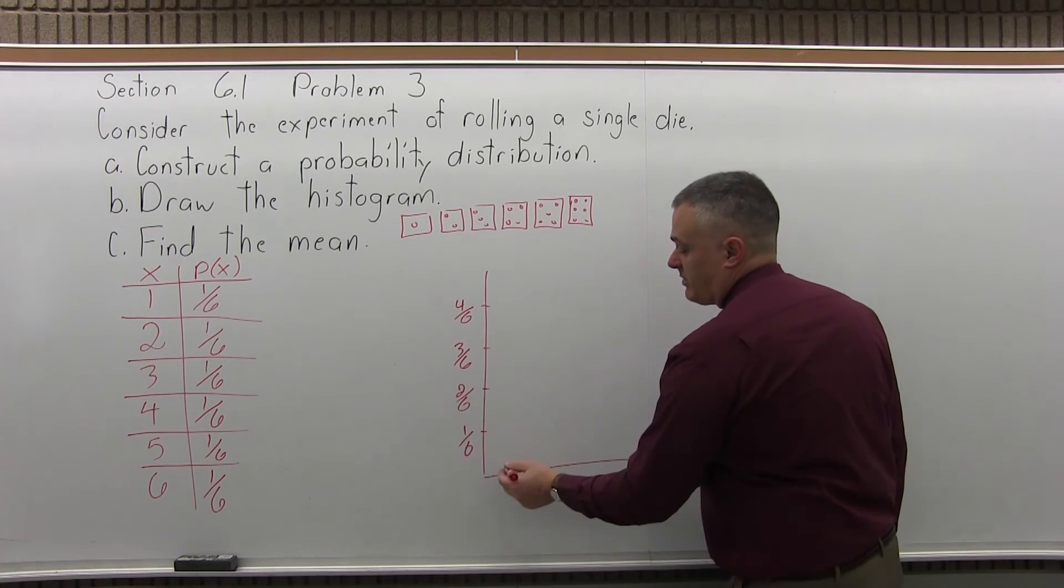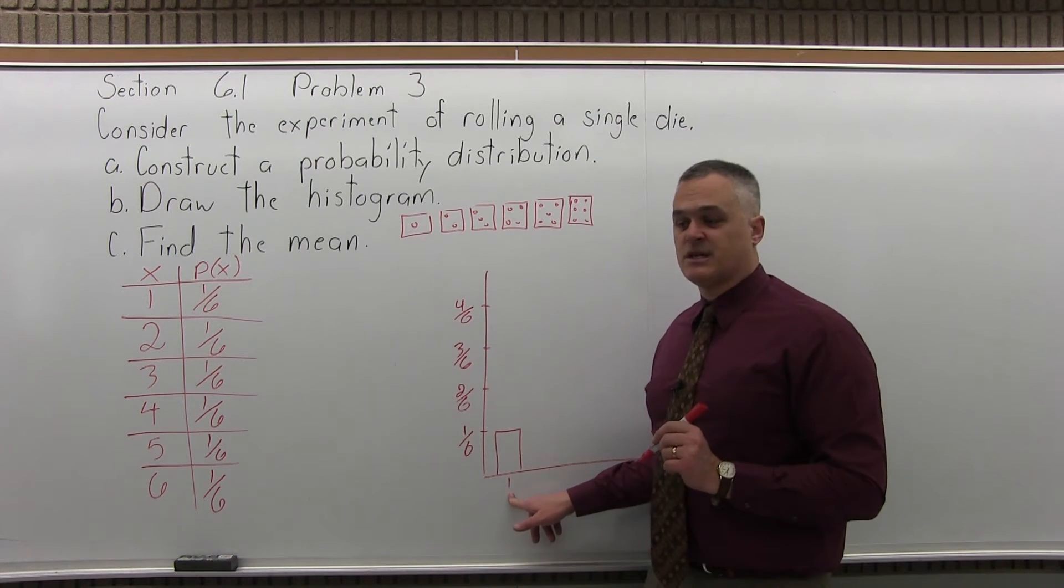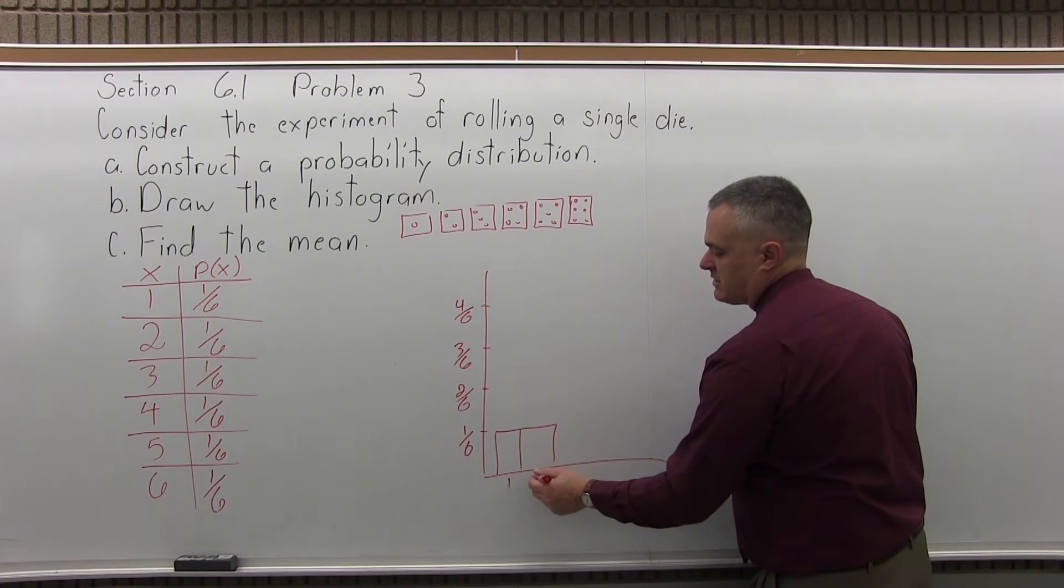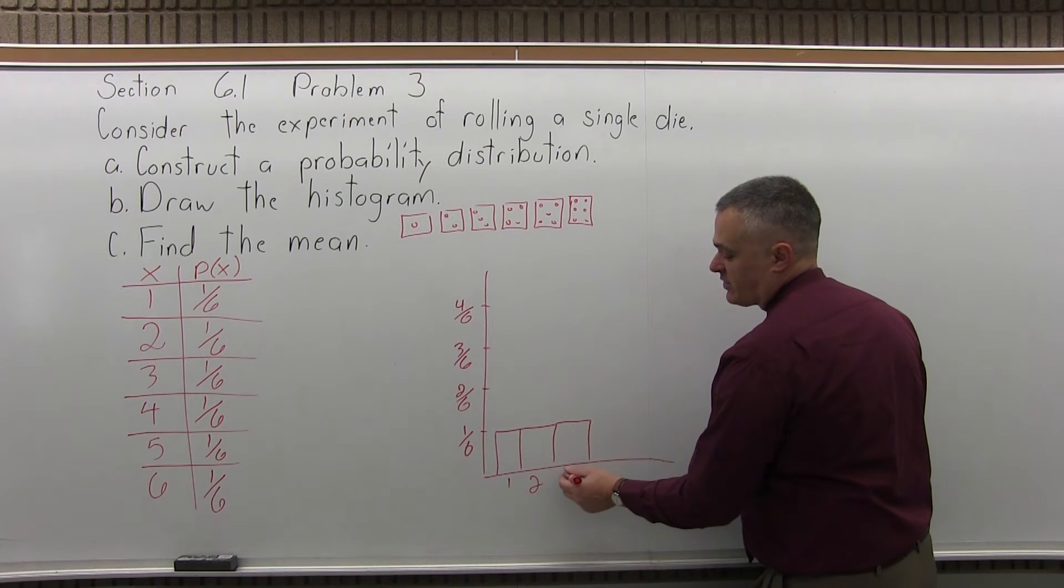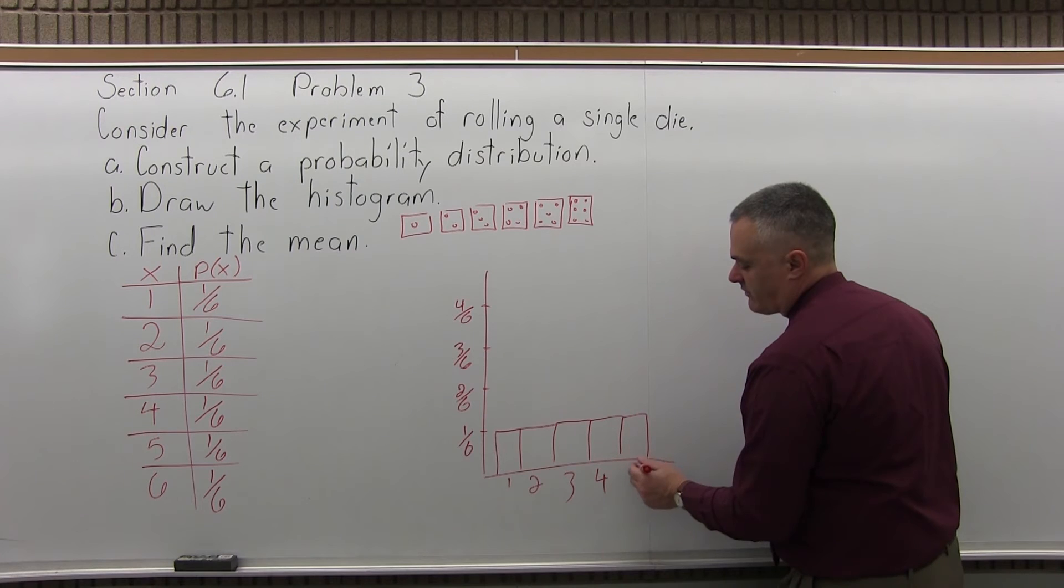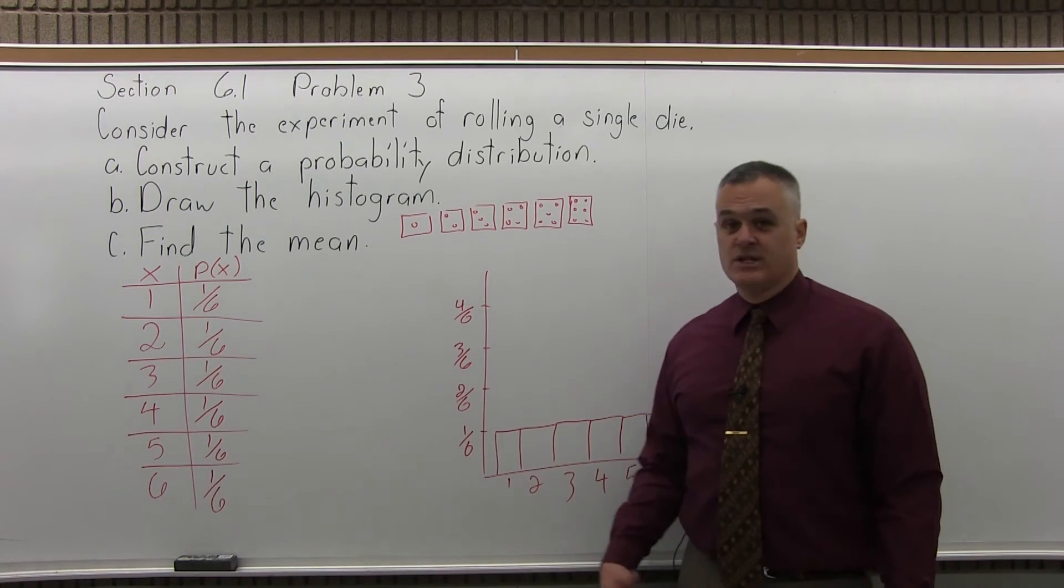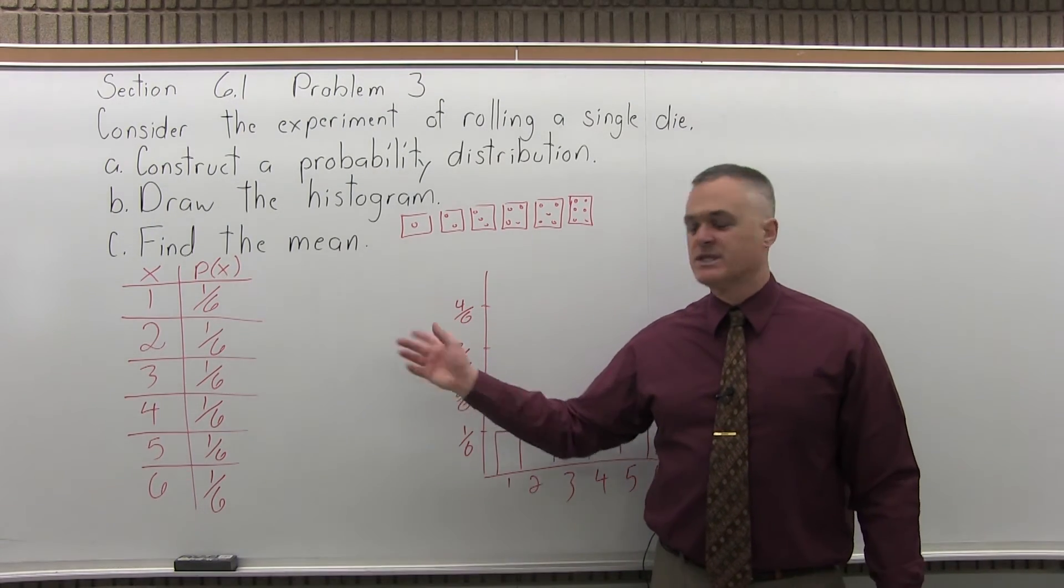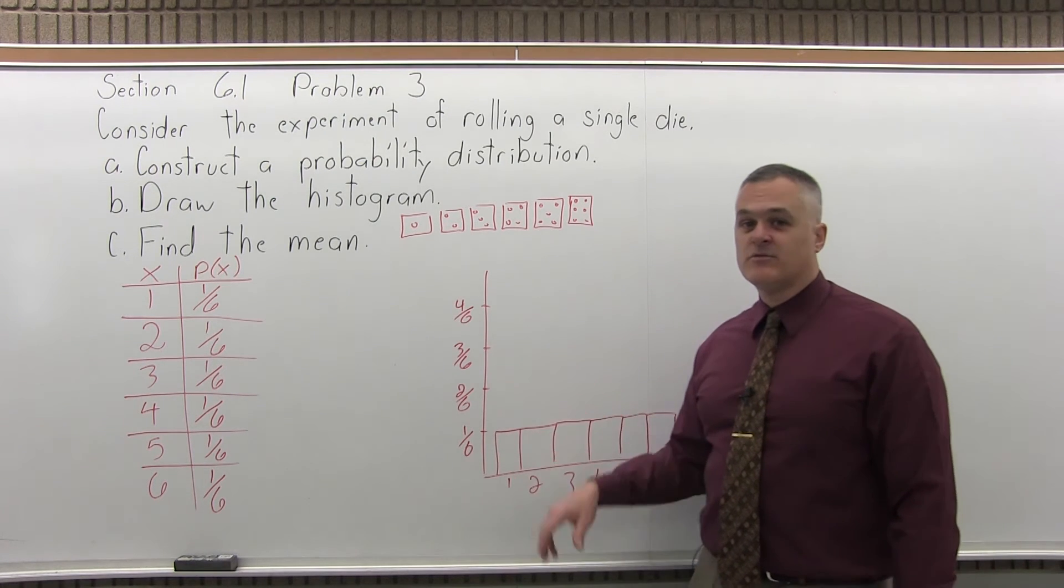So the probability of getting a 1, 1 over 6, and the outcome goes right under the center of that first bar. Probability of getting a 2, also height is 1 over 6, same for a 3, same height for a 4, same height again for a 5. They're all the same 1 over 6 height. So the histogram would have 6 bars all at the same height of 1 over 6 or 0.1666 if you want decimals. And it would look kind of flattened, very uniform.